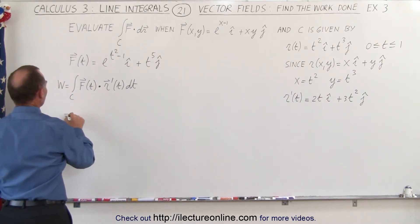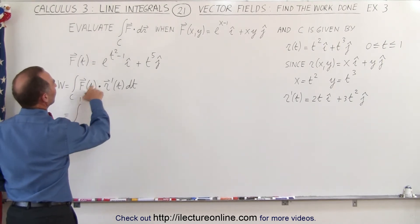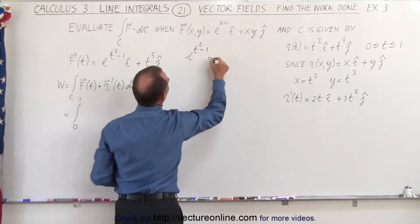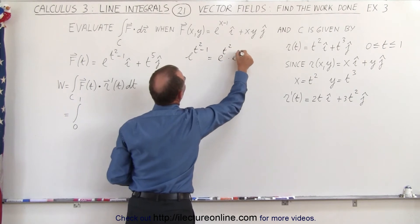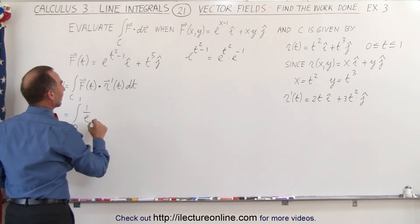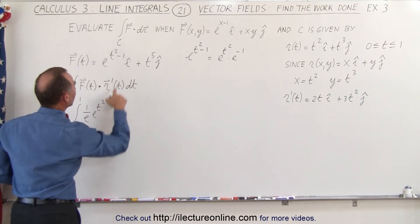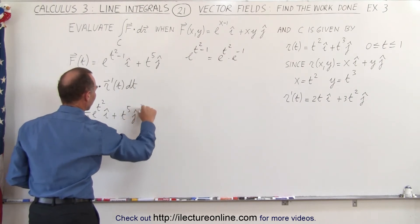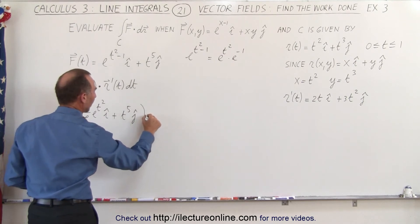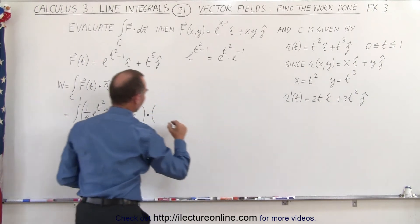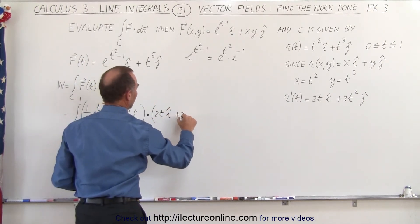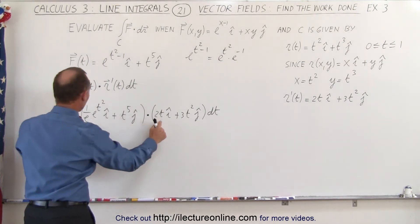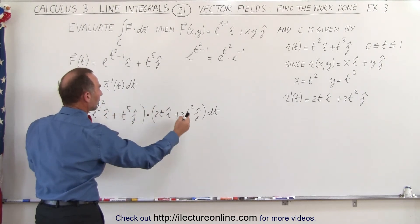Plugging in, this equals the integral from 0 to 1 of e to the t squared minus 1 — which we can separate as 1 over e times e to the t squared — in the i direction, plus t to the fifth in the j direction, dotted with 2t in the i direction plus 3t squared in the j direction, times dt. When we multiply two vectors via the dot product, we multiply the i components together and the j components together, ending up with a scalar — the i's and j's drop off.